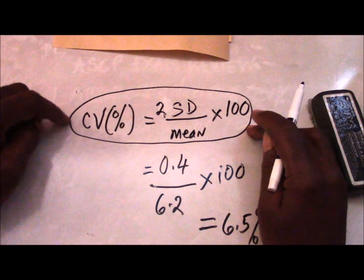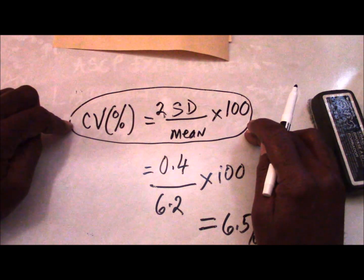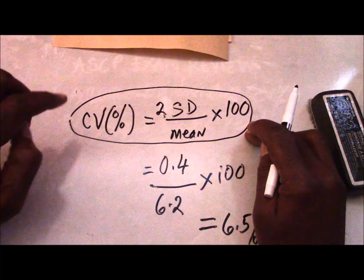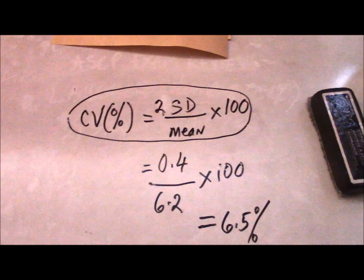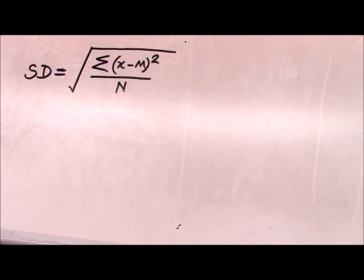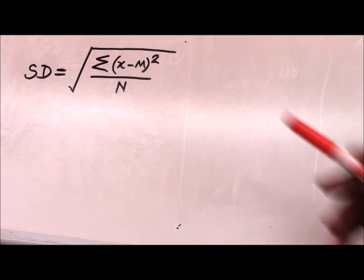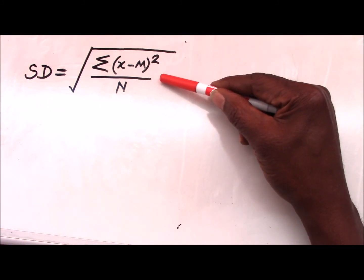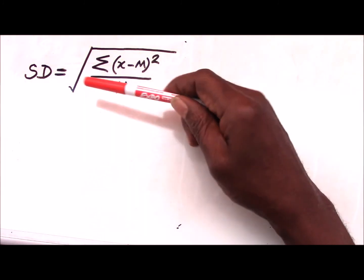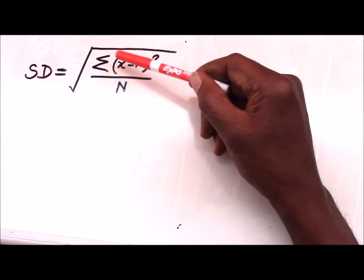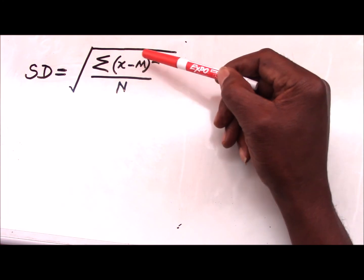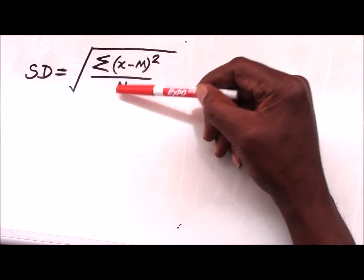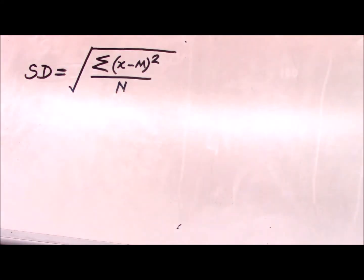The first takeaway is to make flash cards. The second takeaway is to be careful as you approach these questions. The next important formula I'd like you to commit to memory is the standard deviation. The standard deviation is obtained by finding the square root of the sum of the squared differences between each number and the mean, divided by the number of values.